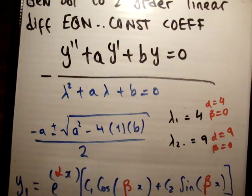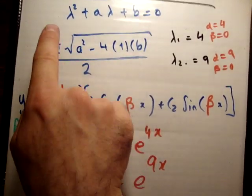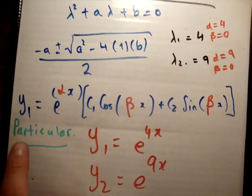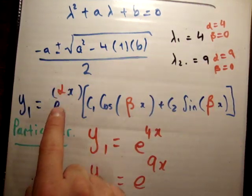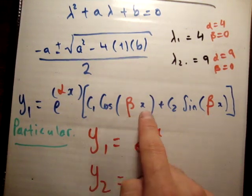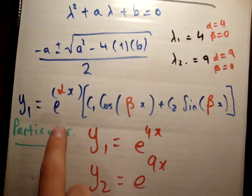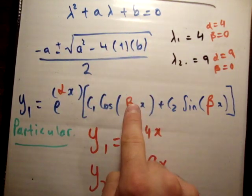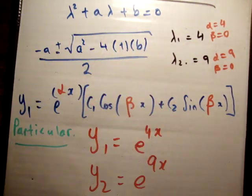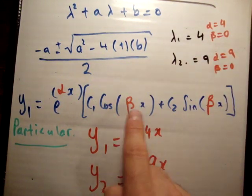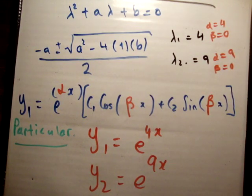That is the general solution to this differential equation, made by solving the characteristic equation. The most general way of getting a particular solution is e^(alpha·x) times (c·cos(beta·x) + c·sin(beta·x)), where alpha corresponds to the real part and beta to the imaginary part of the roots. When the roots are real, beta goes to zero and you're left with just the exponential solutions.